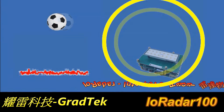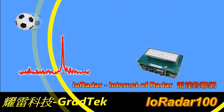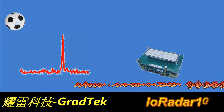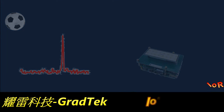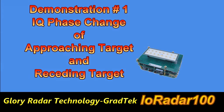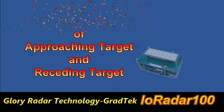Welcome to the IORadar 100 demonstration using Raspberry Pi 4 from Glory Radar Technology. Demonstration 1: IQ phase change of approaching target and receding target.